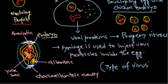The allantoic cavity has a different composition than the chorioallantoic cavity, and it is completely different in structural configuration and nutrient source compared to the yolk sac. Depending upon the type of nutrients the virus needs, we culture them in different places. This is the basic view of how to culture viruses in a developing egg.